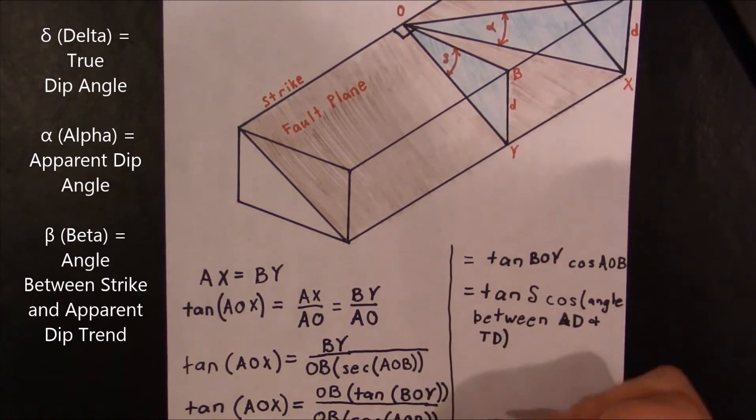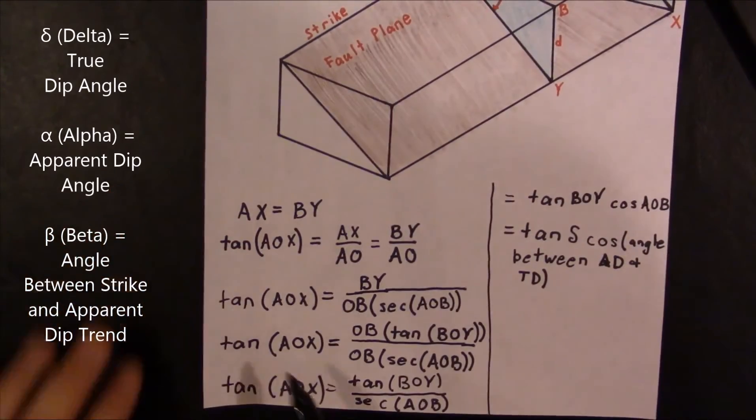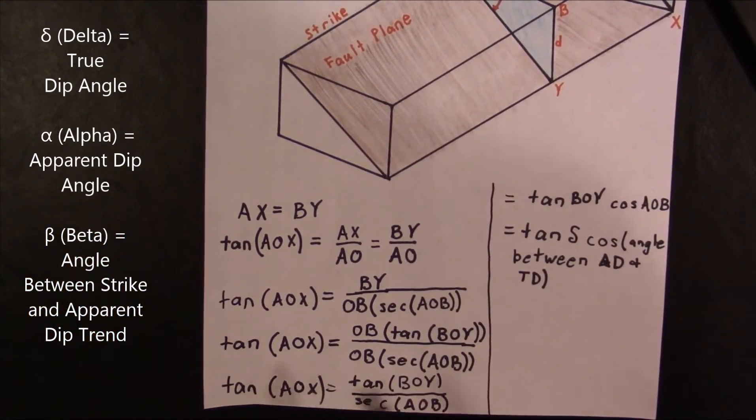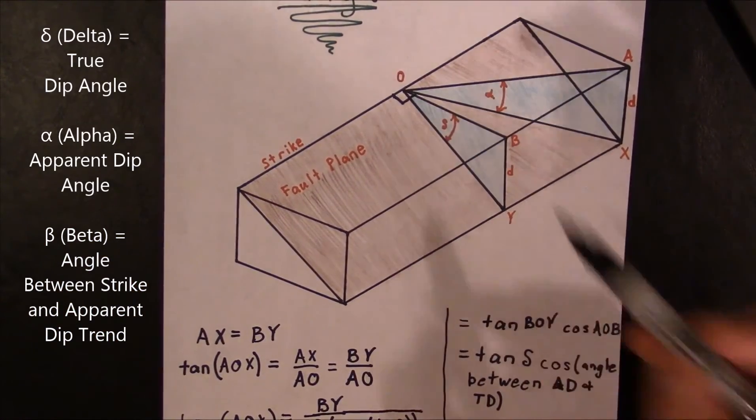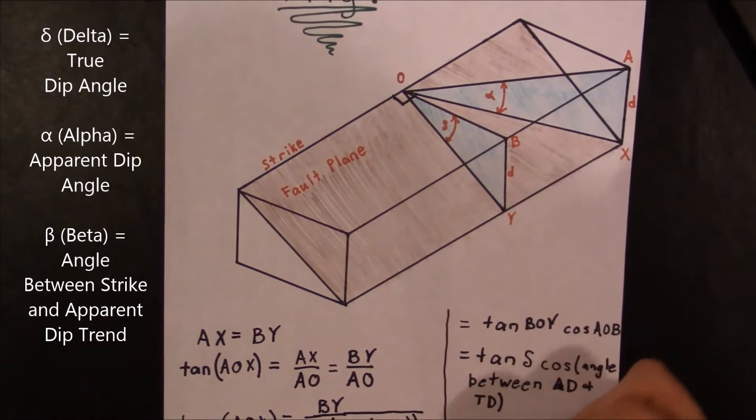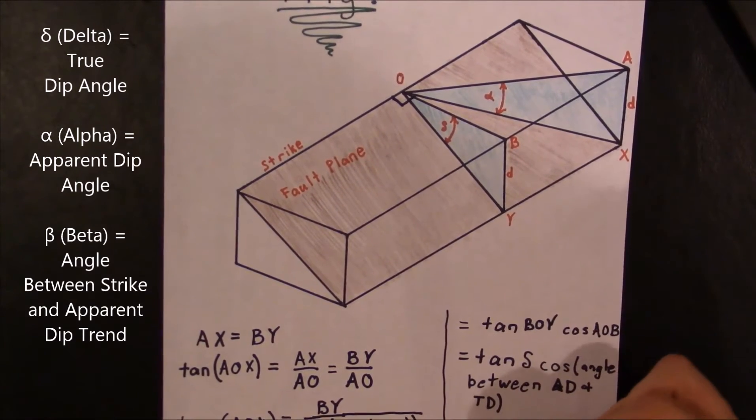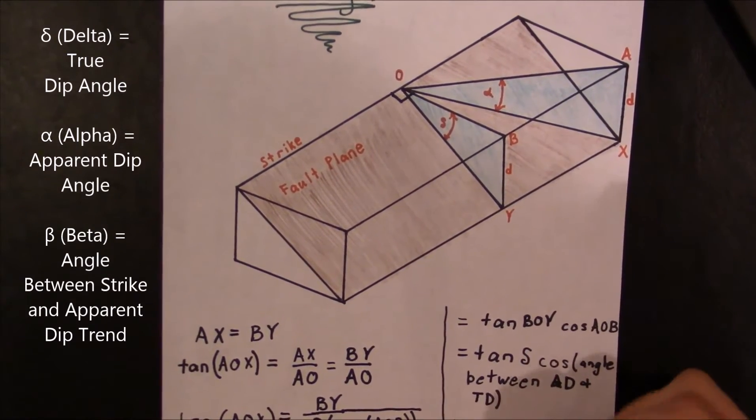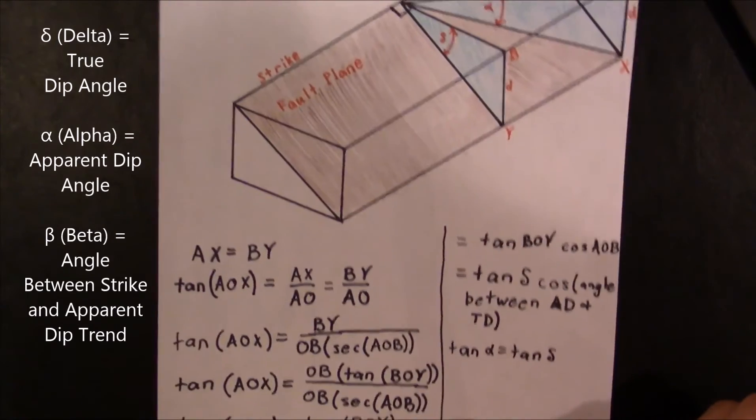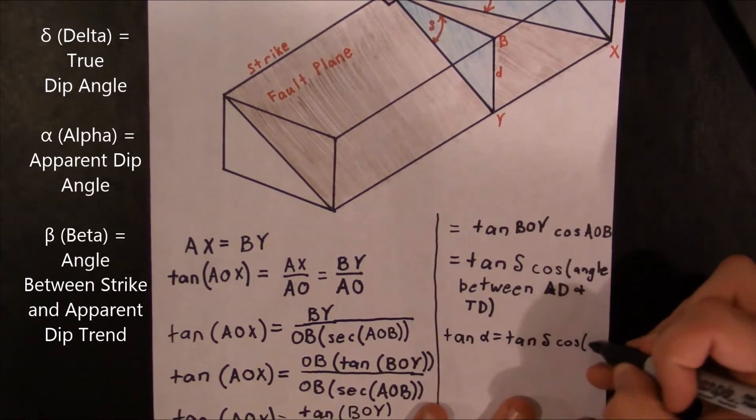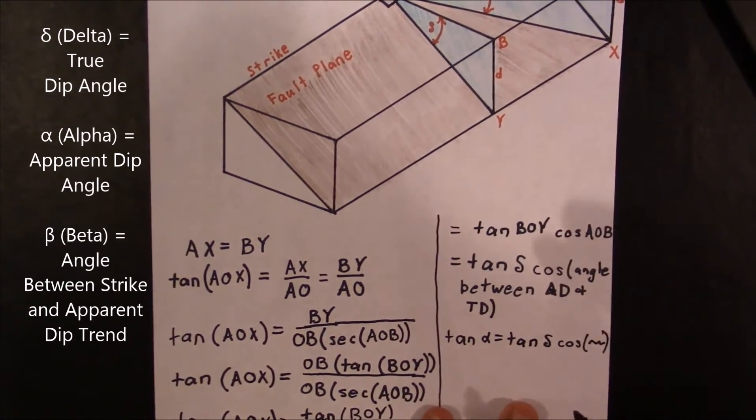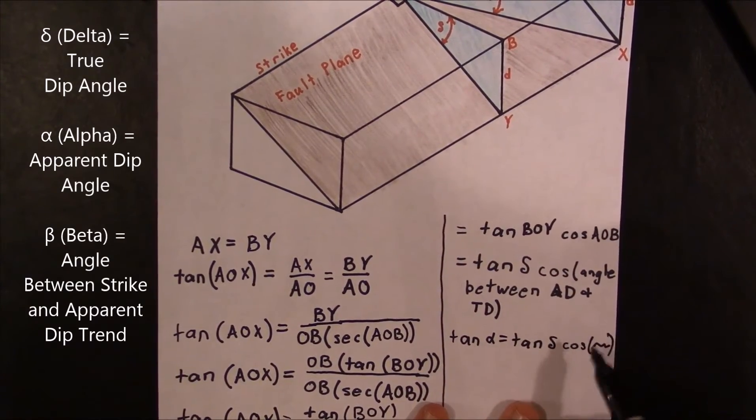Moving forward, we can say that this tangent of AOX over here, so AOX we know is just the angle of the apparent dip. So we can say that the tangent of alpha equals the tangent of delta times the cosine of all that stuff. Okay? We don't really have a symbol for this.